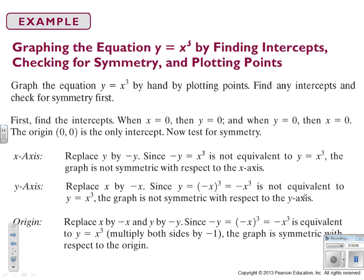For origin, I'm going to replace negative x and negative y. And when I do that, I get a negative in the front on the left-hand side. I get a negative on the right-hand side. I divide everything by negative 1. Here, they multiply it by negative 1. The difference is negligible. And then the graph is symmetric with respect to its origin.